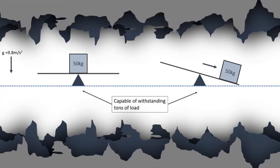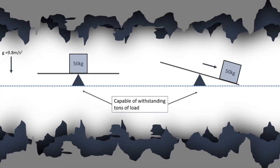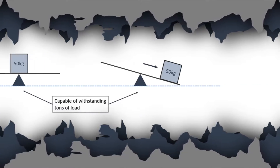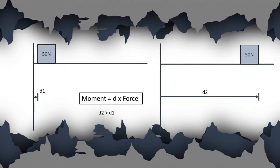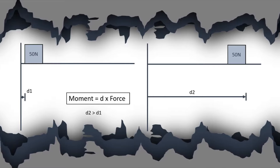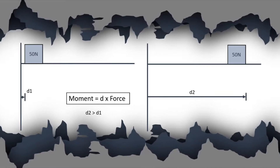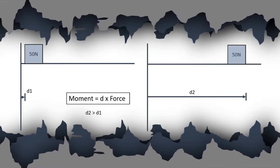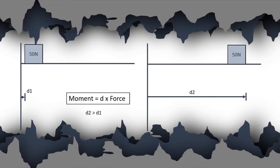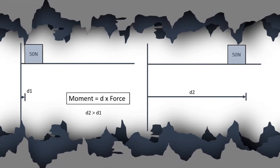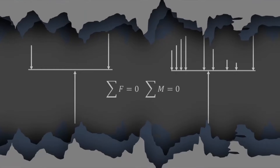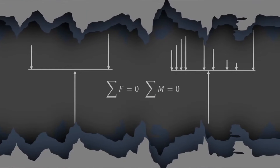The magnitude of the moment increases as the distance increases. We can find the moment generated using the formula: force multiplied by distance. There may be any number of forces with different magnitudes acting on a body.